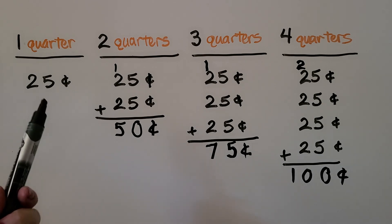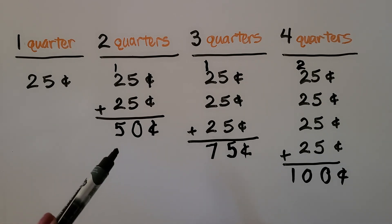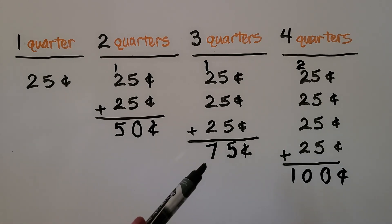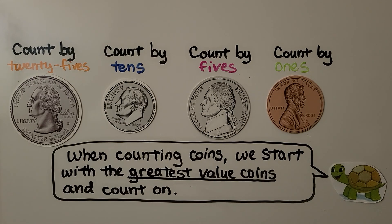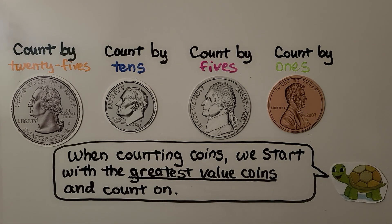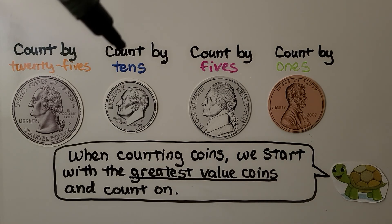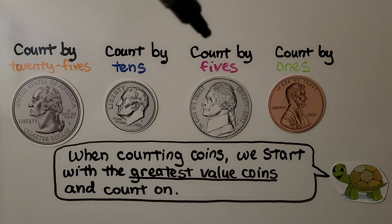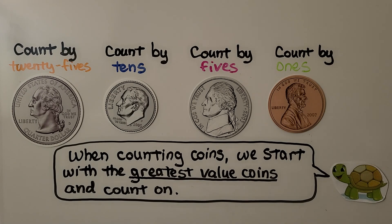So one quarter is 25 cents, two quarters is 50 cents, three quarters is 75 cents, and four quarters is equal to 100 cents. When we count quarters, we count by 25s. When we count dimes, we count by tens. When we count nickels, we count by fives. And we count pennies by ones. When counting coins, we start with the greatest value coins and count on.